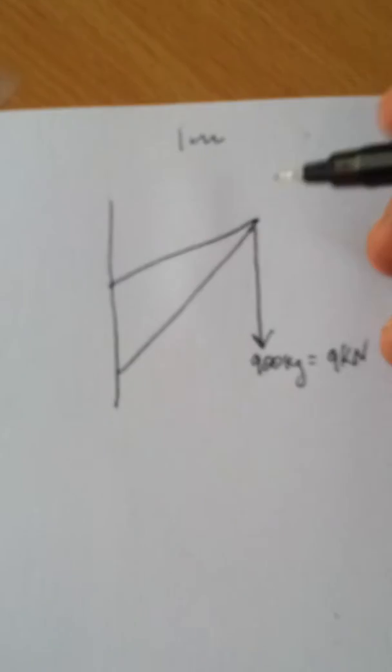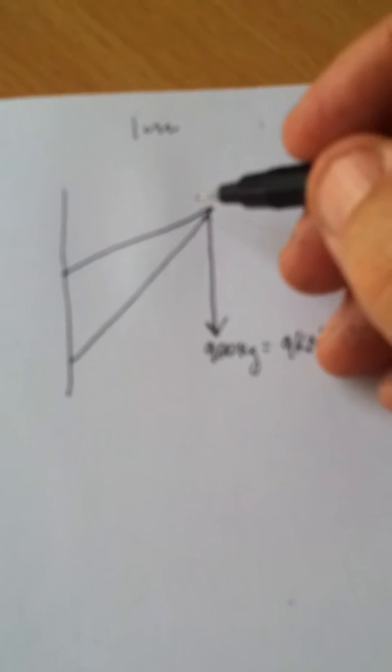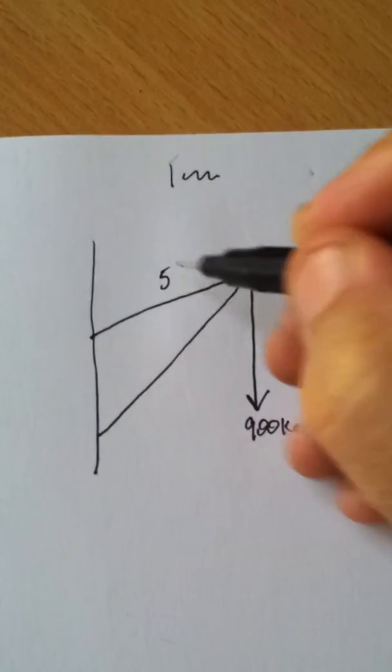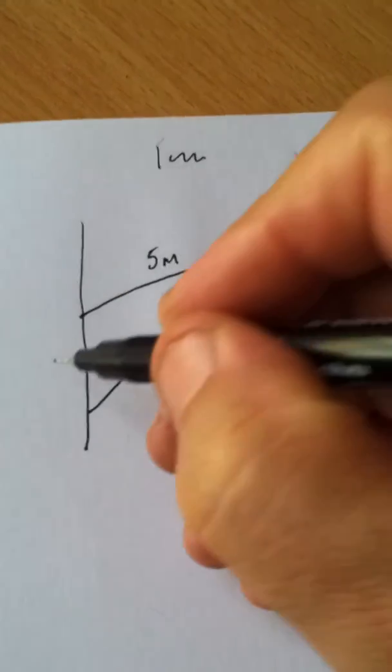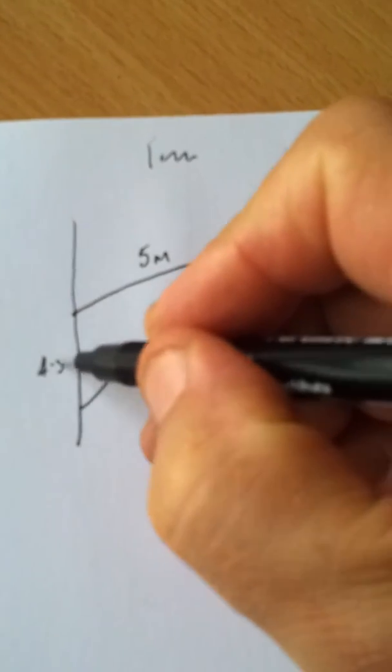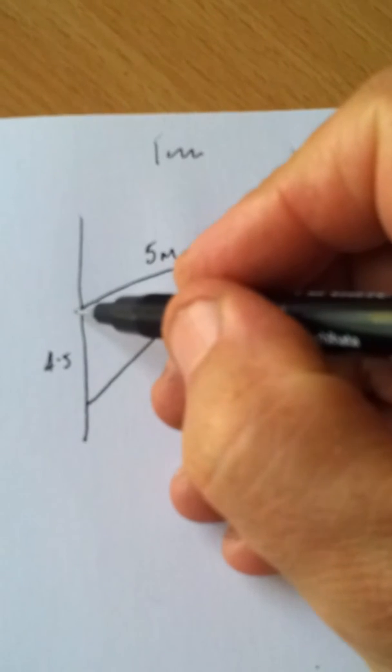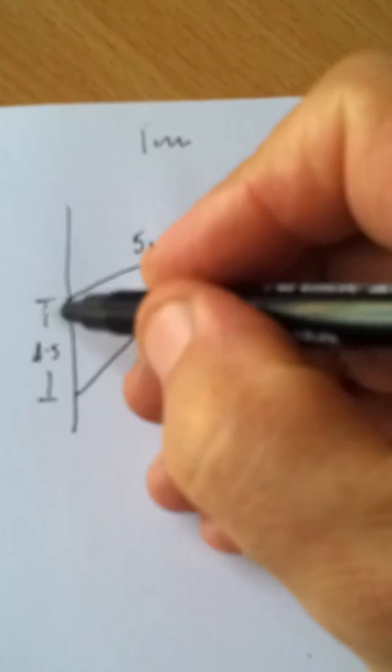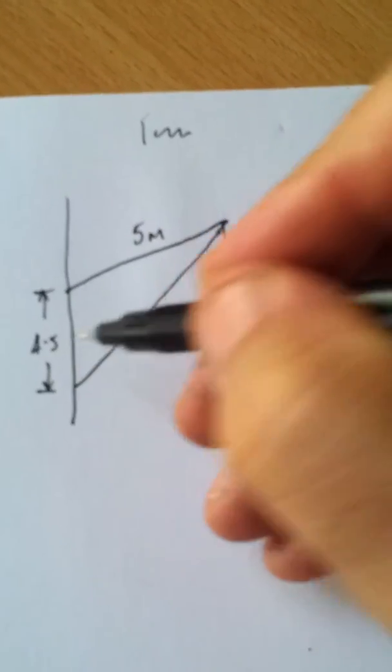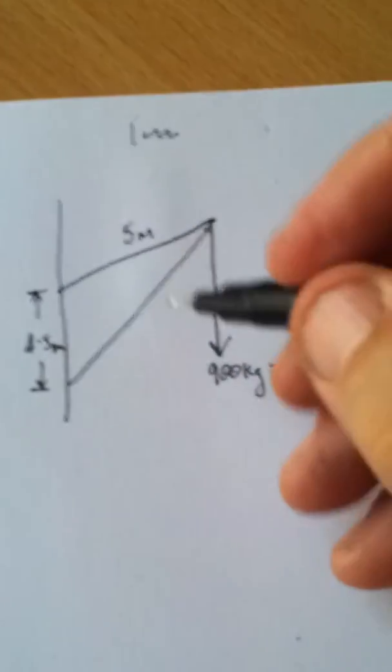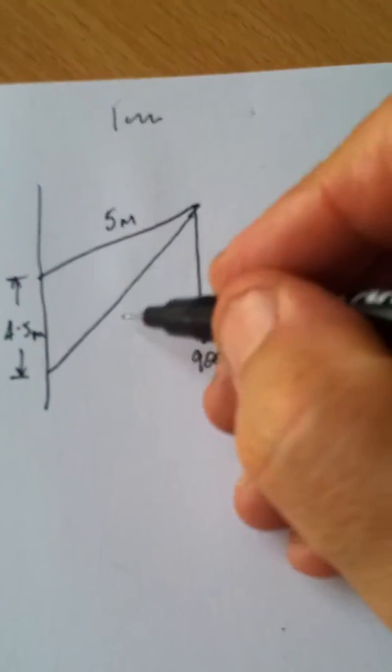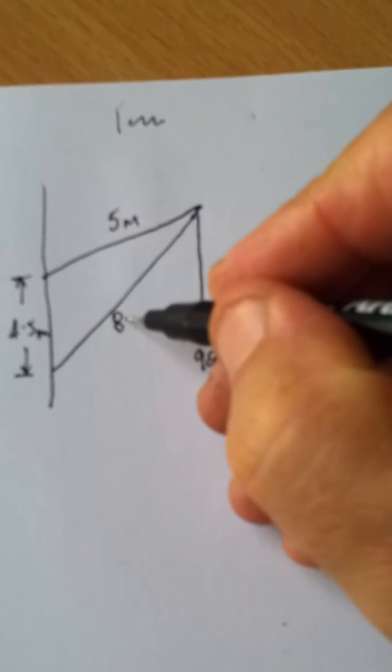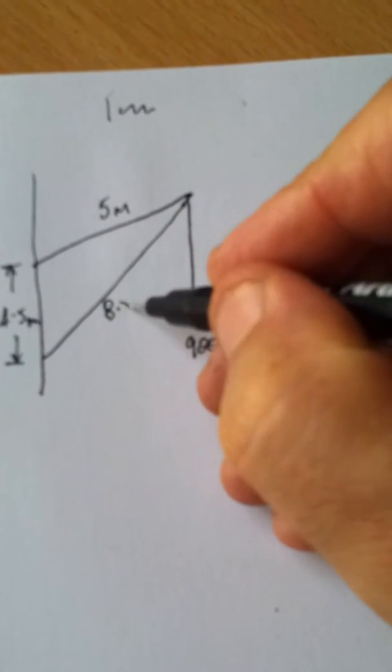Now we're also told a few other things. We're told that the length of the tie here is 5 metres. We're told that the length from the tie anchor point to the wall to where the jib anchors to the wall is 4.5 metres. And we're told the length of the jib itself is 8.5 metres.